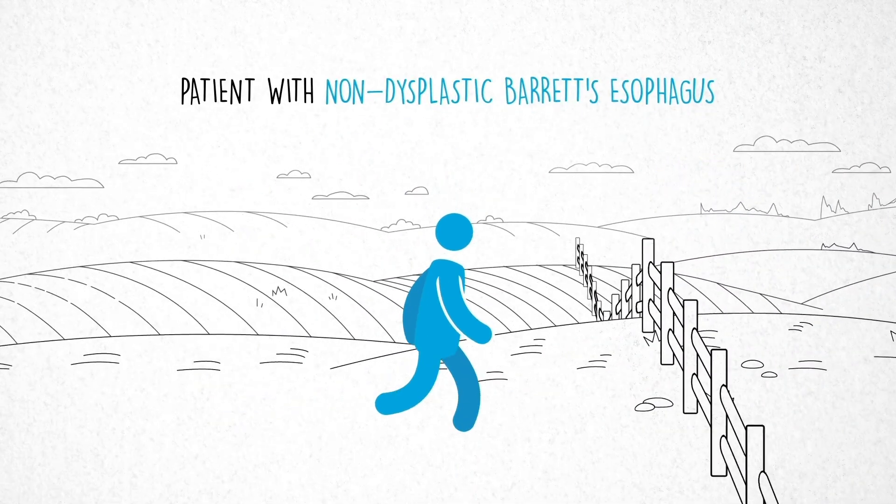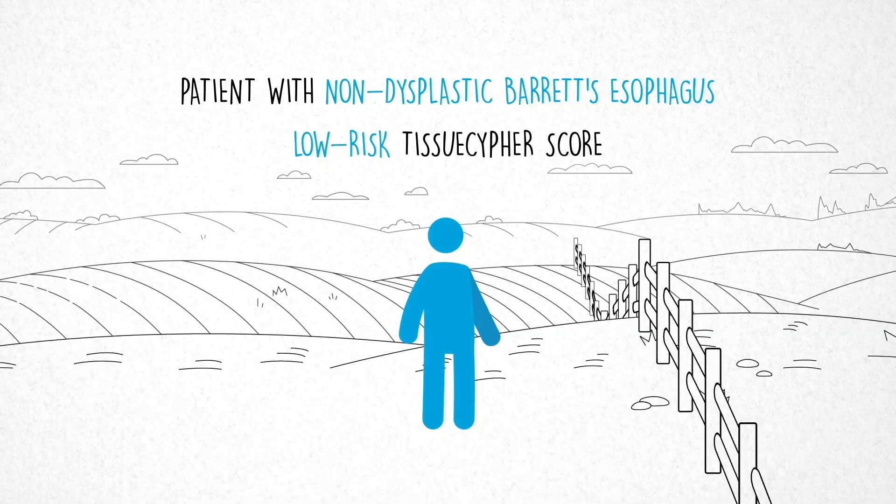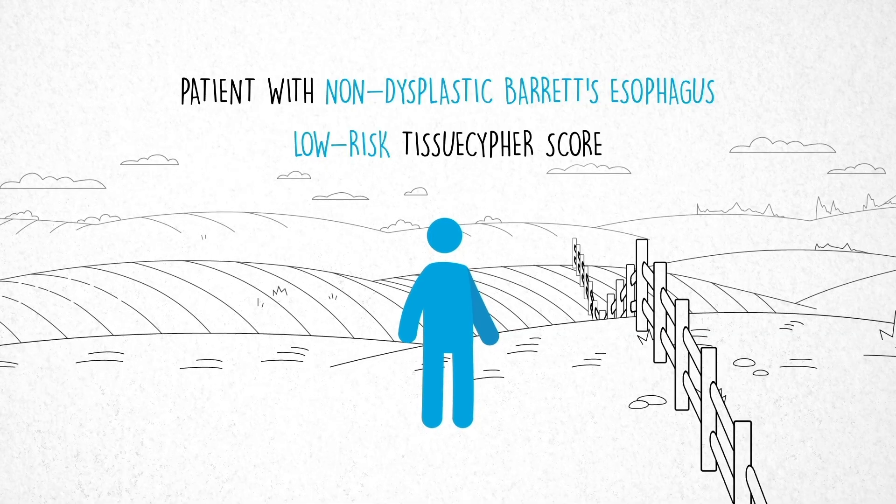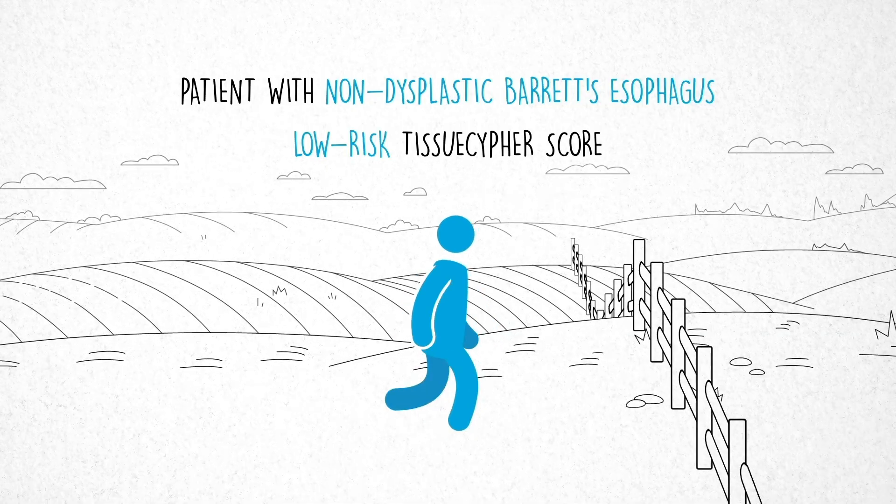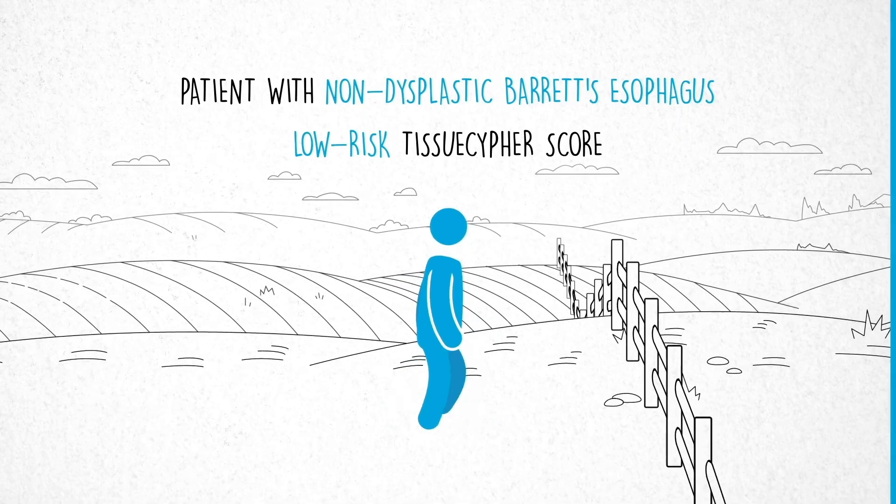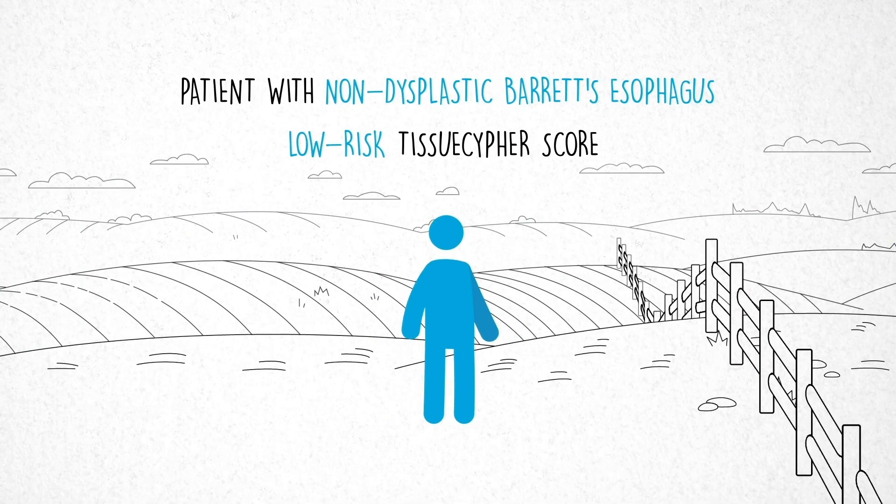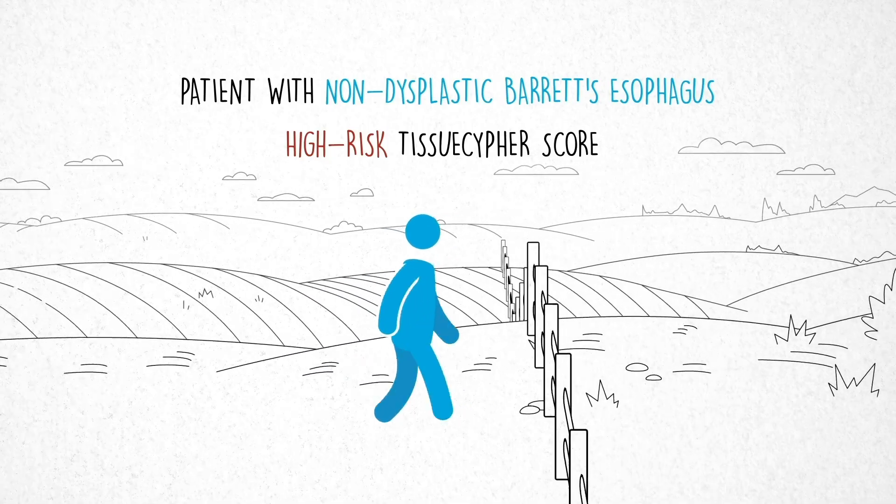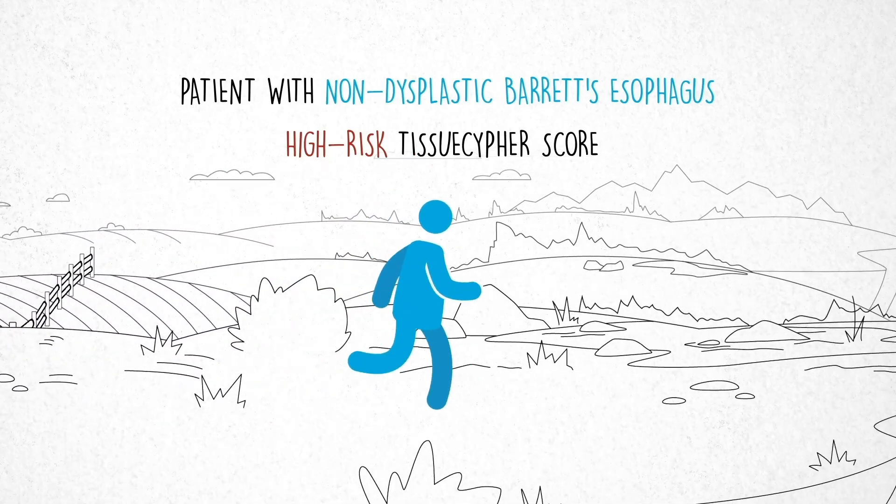A patient with non-dysplastic Barrett's esophagus and a low-risk TissueCypher score can feel confident that they are standing in place or at least moving slowly. By contrast, a patient receiving a high-risk score is sprinting towards that fence and ultimately towards the cliff.